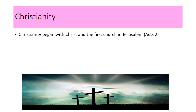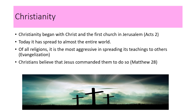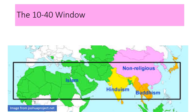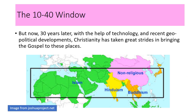When we talk about Christianity, we know that it began with Christ and the first church in Jerusalem as found in Acts chapter 2. Today, it has spread to almost the entire world, and of all religions, it is the most aggressive in spreading its teachings — what we call evangelization. Christians believe that Jesus commanded them to do so, as espoused in Matthew chapter 28. In the 1990s, the only place Christianity hadn't penetrated was the 10/40 window — countries between 10 degrees south latitude and 40 degrees north latitude, mainly Asian and North African countries. But 30 years later, with the help of technology and recent geopolitical developments, Christianity has taken great strides in bringing the gospel to these places.